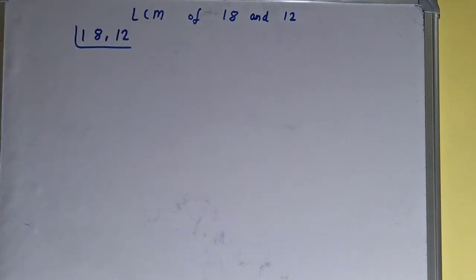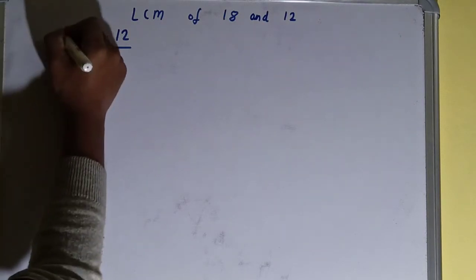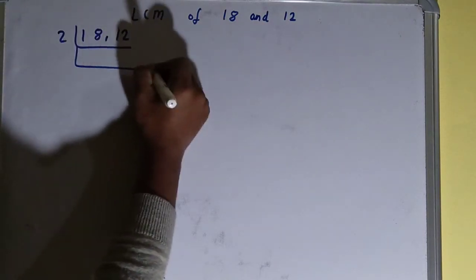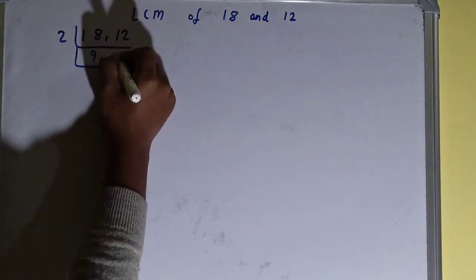The next thing we need to do is start with the lowest prime number, that is 2, and check if any of the numbers is divisible or not. So if we check, both the numbers are divisible by 2, so we'll divide. On dividing, this will become 9, this will become 6.